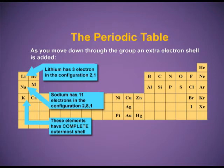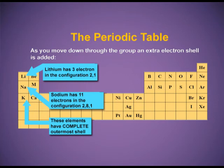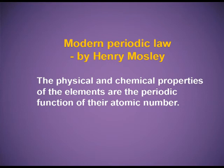Lithium has 3 electrons in the configuration 2, 1. Sodium, atomic number 11, has 11 electrons and the configuration 2, 8, 1 — one extra shell is added. Potassium has 19 electrons in the configuration 2, 8, 8, 1 — again one more shell is added. But all these elements — lithium, sodium and potassium — have one electron in their valence shell, so they are all grouped in the first group, known as the alkali metals. Modern Periodic Law by Henry Moseley: the physical and chemical properties of the elements are the periodic function of their atomic number.